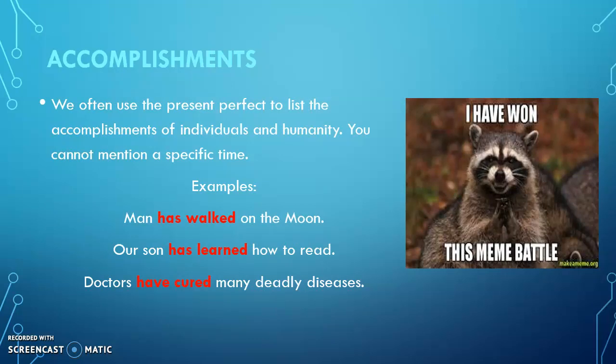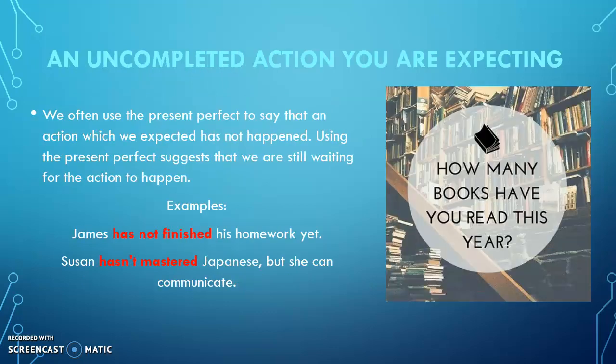El siguiente uso es accomplishments — logros. Aquí pueden hablar tanto de sus logros personales como de los logros de la humanidad. Por ejemplo, 'Man has walked on the moon' — ese es un logro de la humanidad. 'Our son has learned how to read' — ese es un logro del niño. 'Doctors have cured many deadly diseases' — los doctores han curado muchas enfermedades mortales. Acuérdense: del pasado al presente podemos ver ese logro cuyo resultado seguimos viendo en el presente.